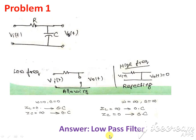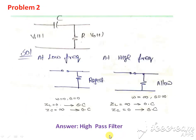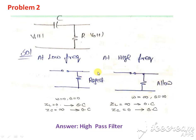the given circuit is low pass. Second problem: we again check two cases — low frequency and high frequency. At low frequency, the capacitor is an open circuit, so the input is not transferred to the output terminal — the circuit is rejected. At higher frequency, the capacitor is short-circuited, so the input is passed to the output — this is allowed.